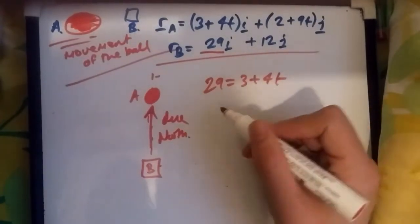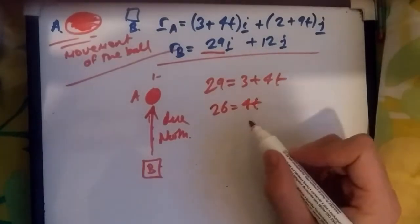So solving this, what do we have? Subtracting 3, we get 26 equals 4t. Dividing by 4, we should get t equals 6.5.